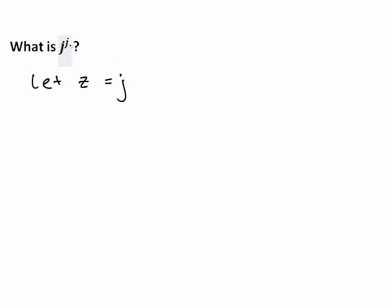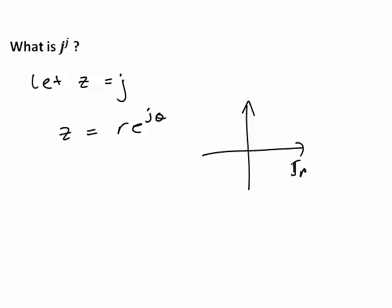In particular, we let z be equal to j, and we're going to rewrite this in the form z equals r times e to the j theta. Drawing an Argand diagram so we can see what this looks like — the real part of j is 0, and because it is just 1j, the imaginary part is 1.